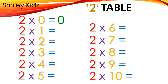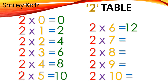2 tables: 2×0=0, 2×1=2, 2×2=4, 2×3=6, 2×4=8, 2×5=10, 2×6=12, 2×7=14, 2×8=16, 2×9=18, 2×10=20.